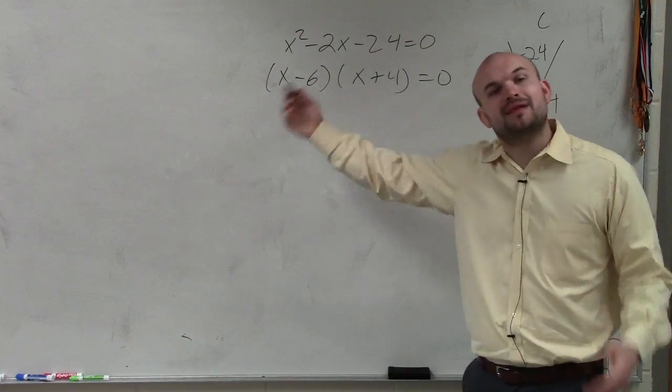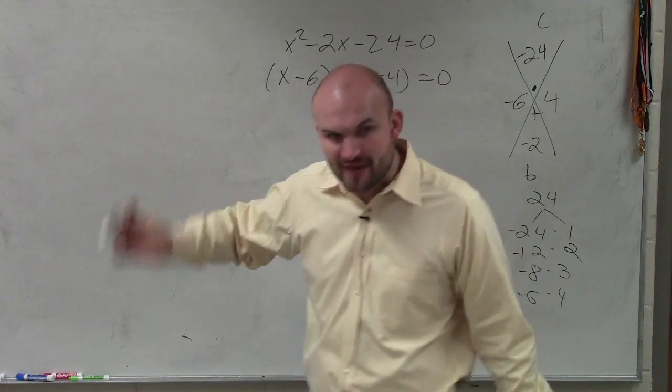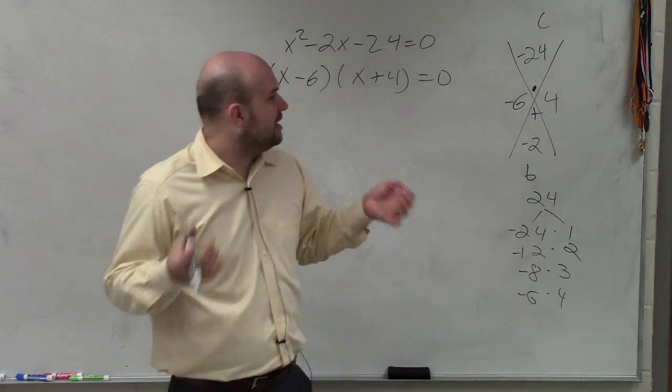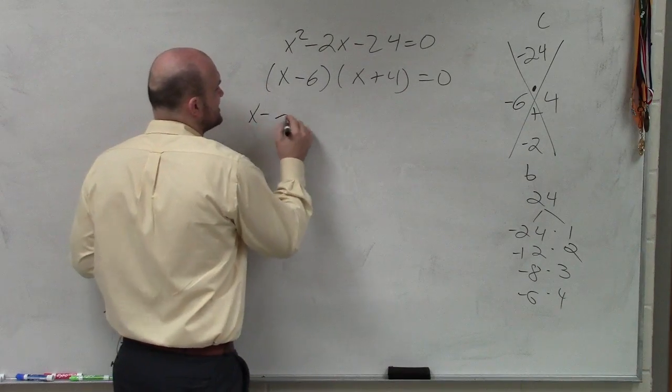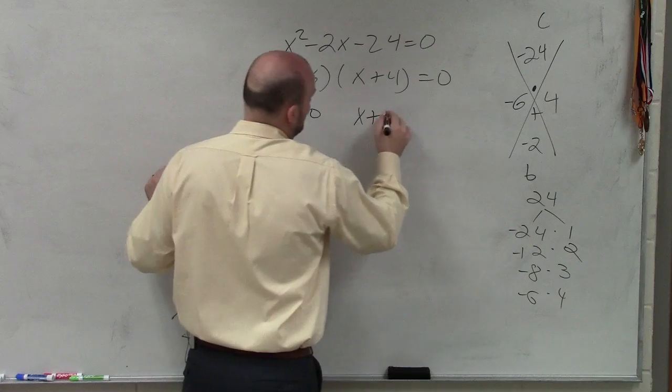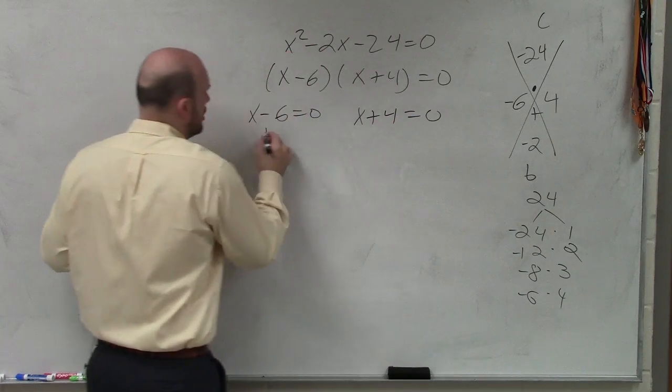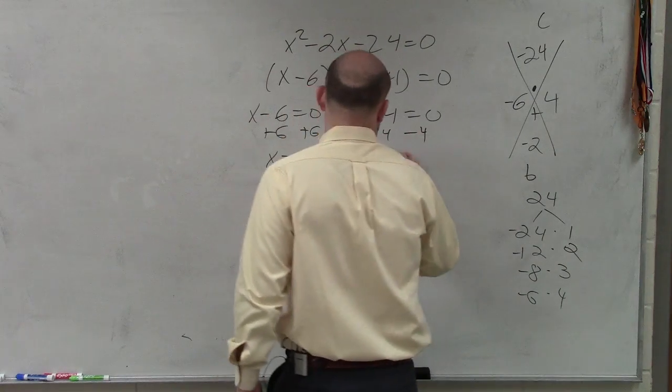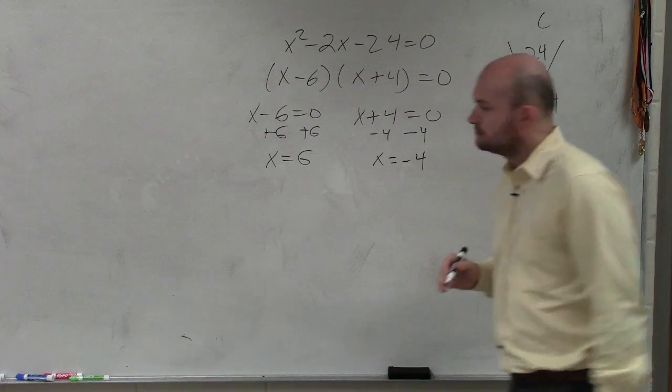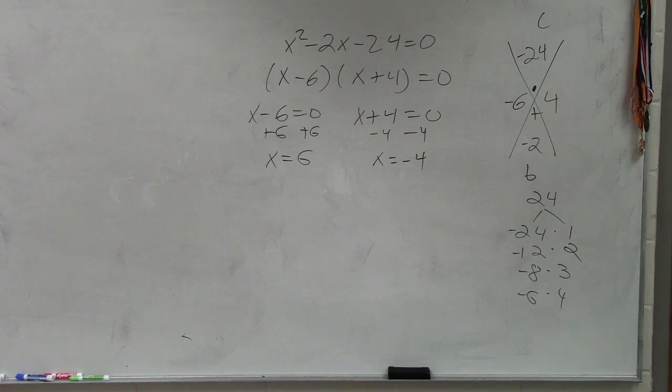Now we apply the zero product property. And this is why we've been working on factoring. Because factoring allows us to create a product when it's set equal to zero. Now we set both of them equal to zero. And now you solve. And there you go. Done. Two answers.